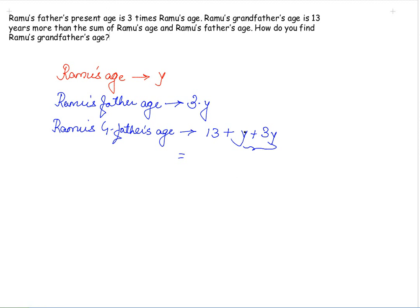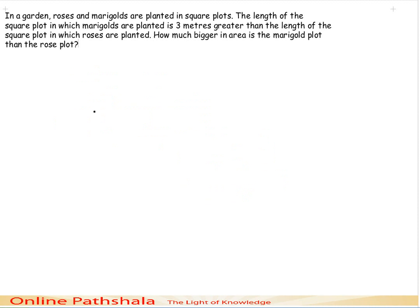Since y and 3y have the same algebraic factor, they can be added: 1y plus 3y gives 4y. So Ramu's grandfather's age is 4y plus 13. This is one more example of an algebraic expression, and now let's move to one more application.